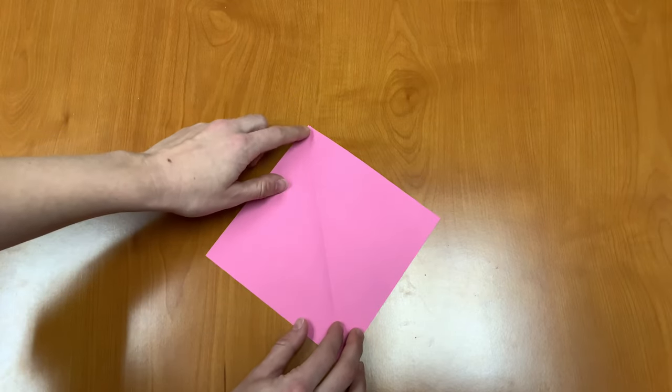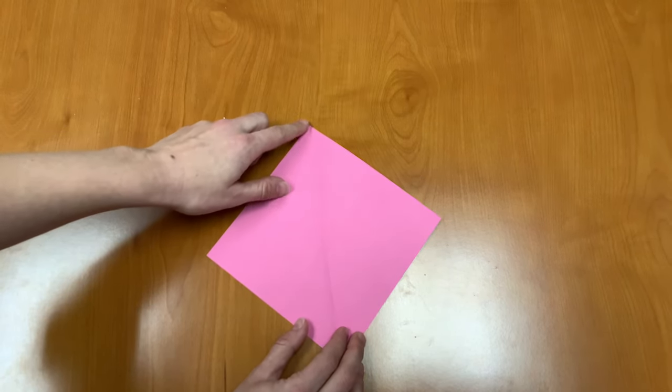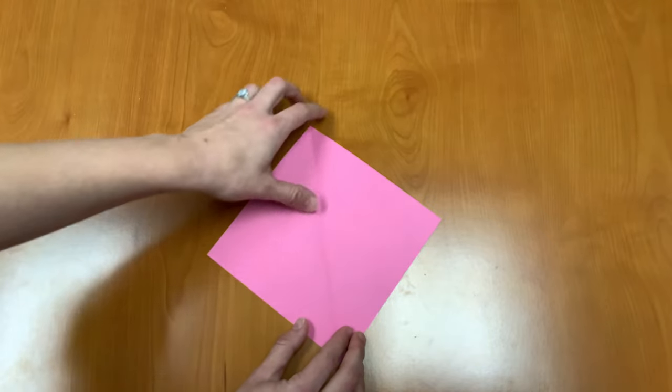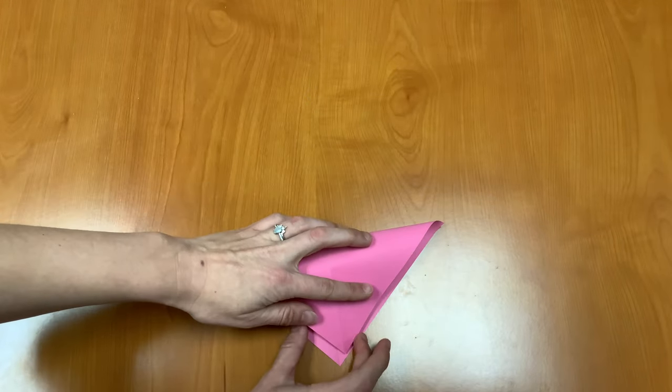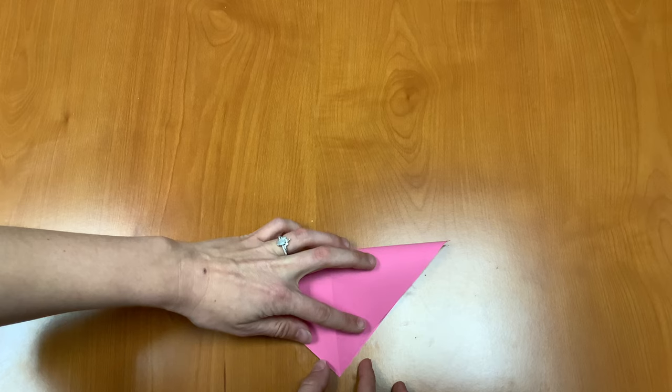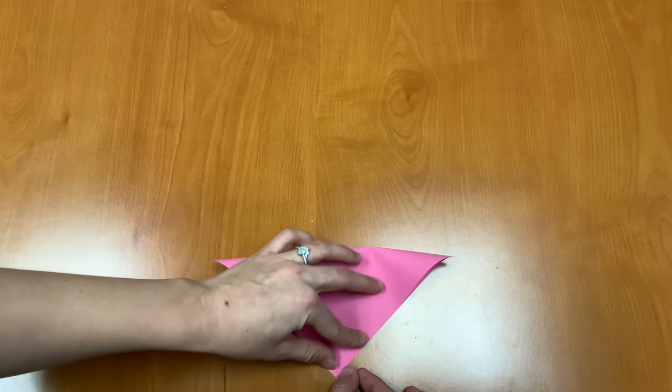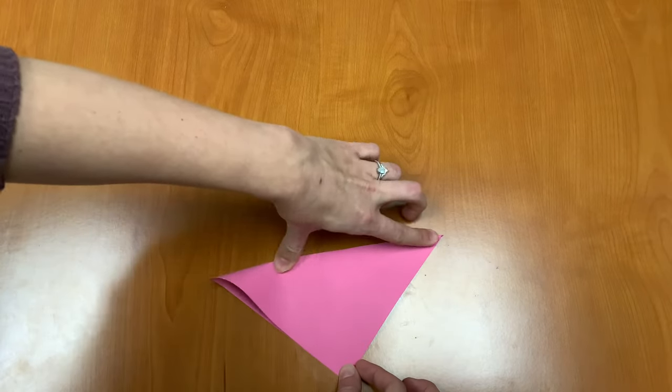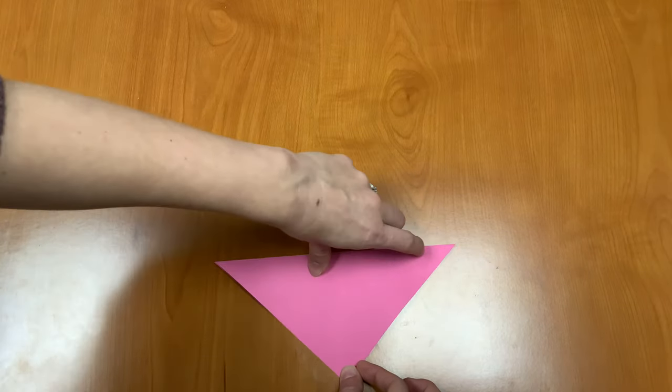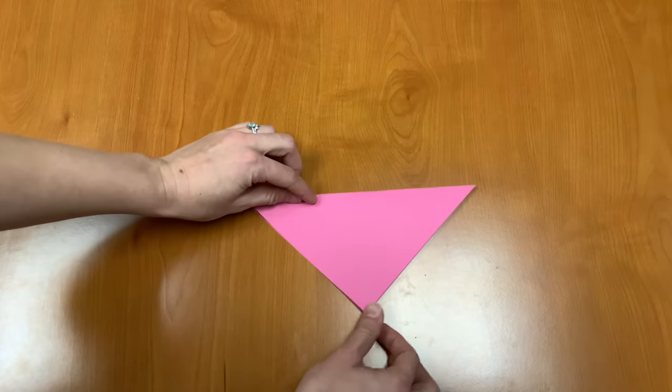Next we're going to fold the paper in half again horizontally this time from the top corner to the bottom corner. And we're going to keep our paper folded this way.